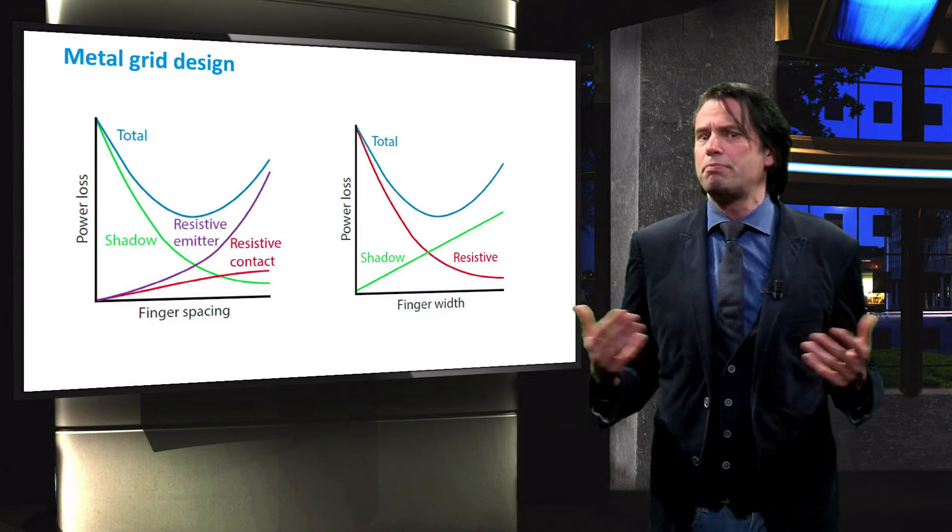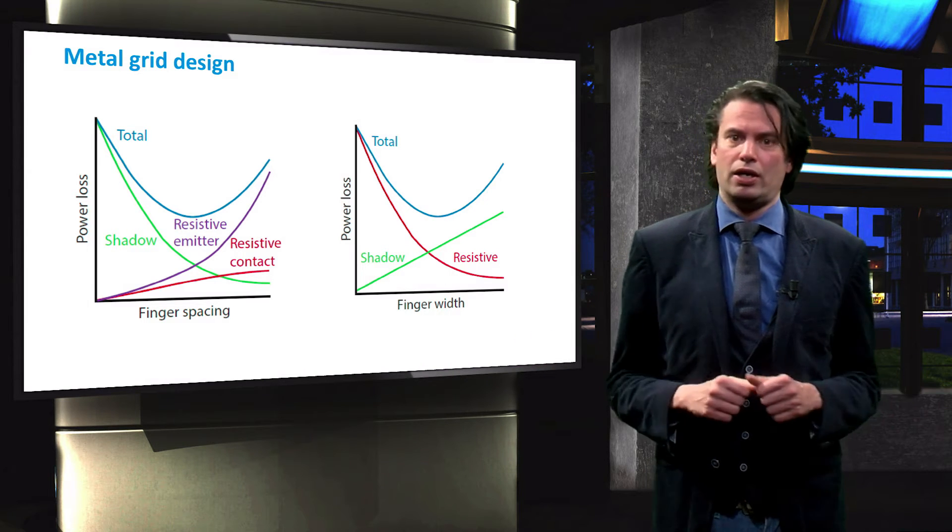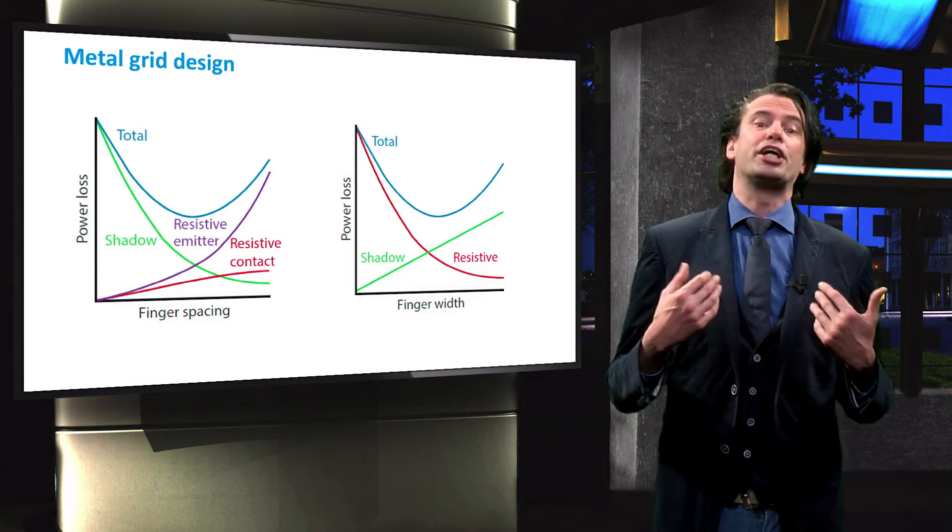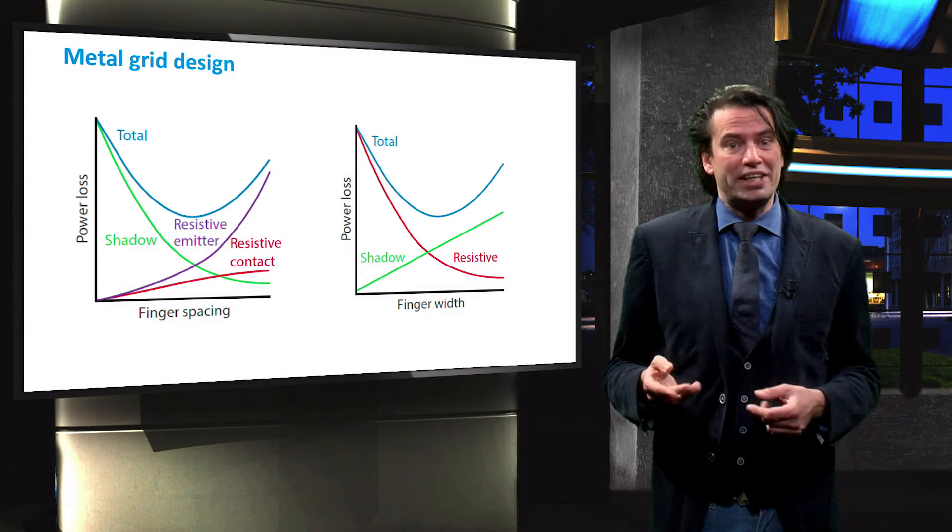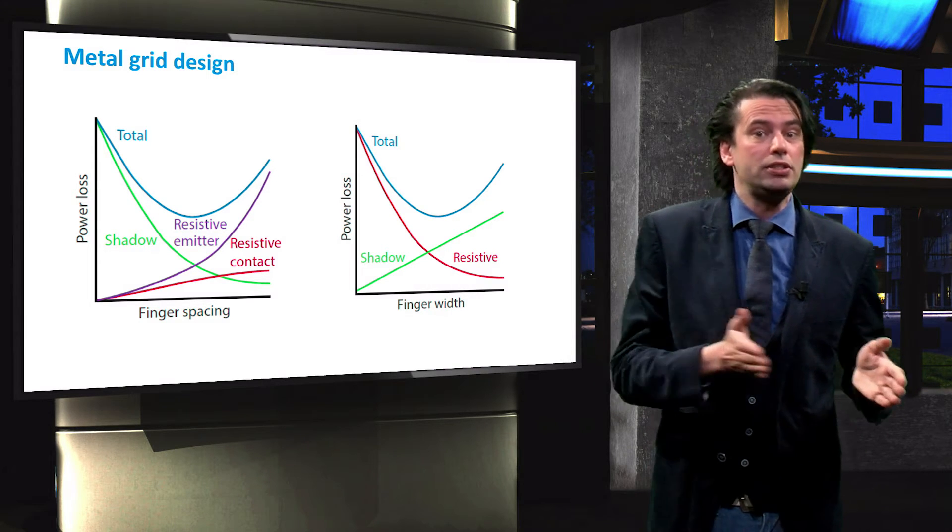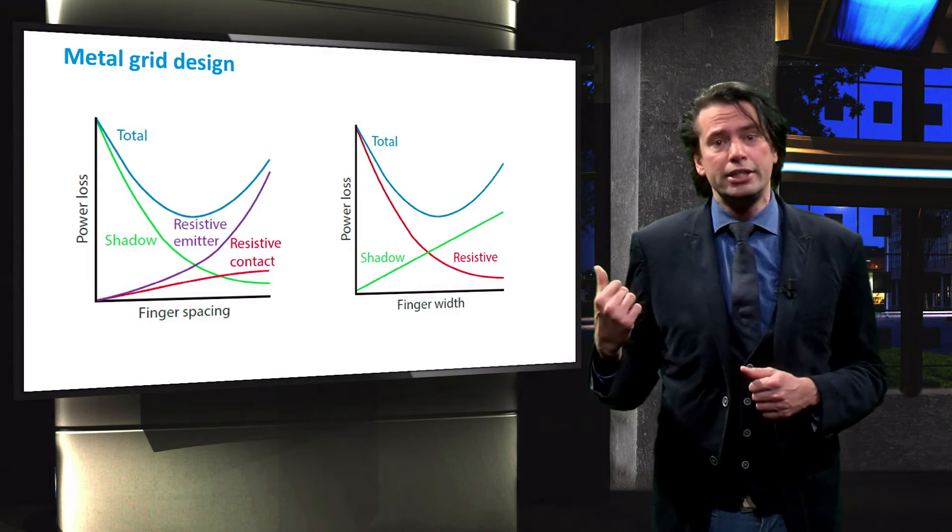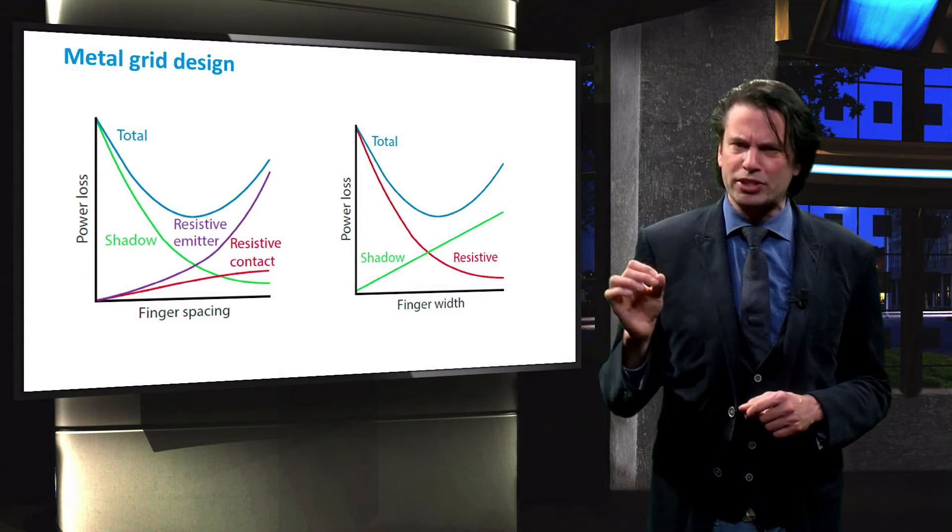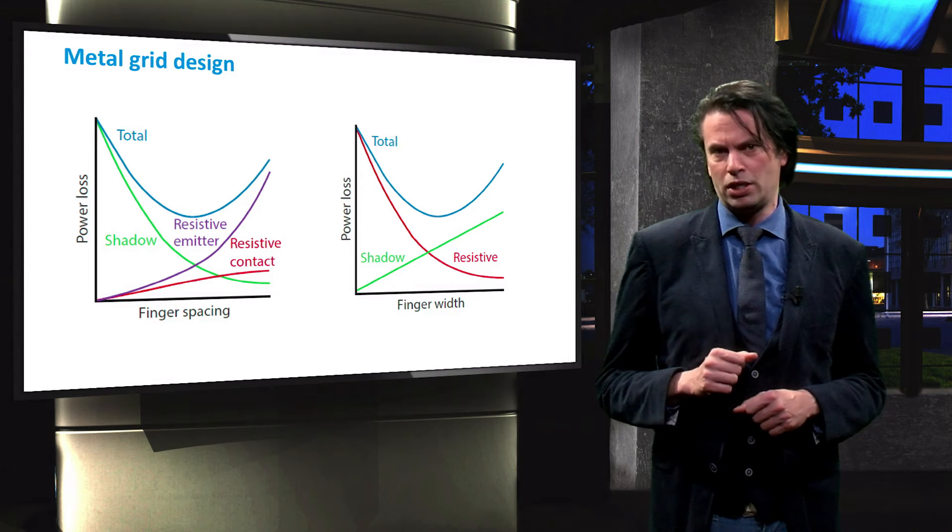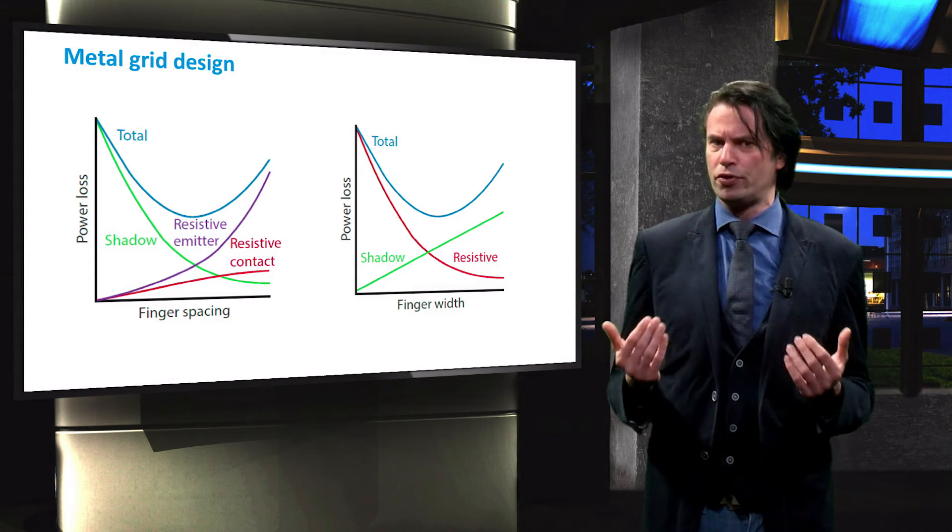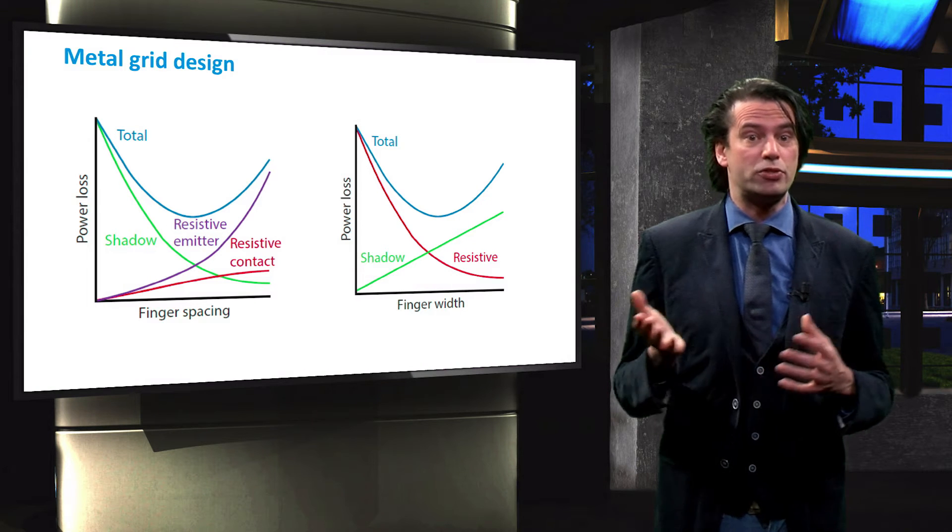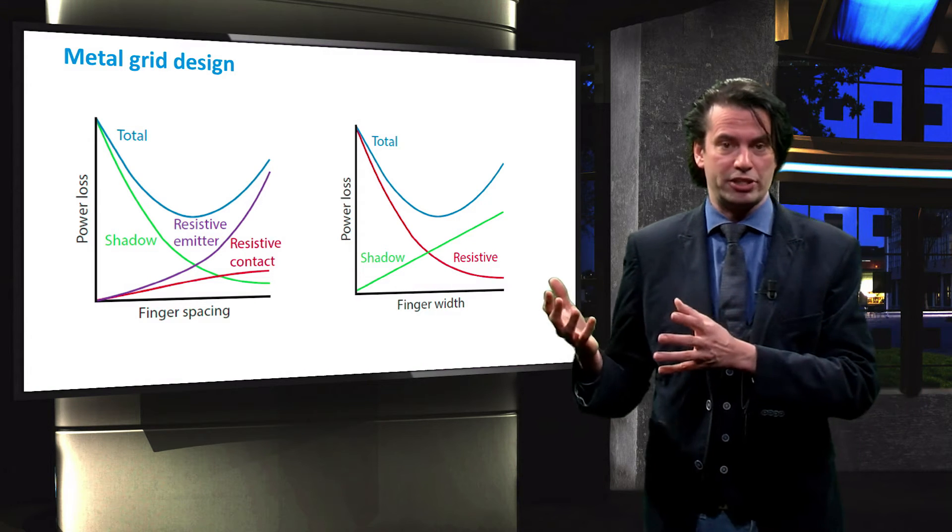A similar plot can be made for power loss versus finger width. The larger the width, the larger the shading losses will be, but with increasing width the resistance decreases. Again, here an optimum exists at which the power losses are minimal. We see that optimizing the front contact pattern is a complex interplay between the finger width and spacing.